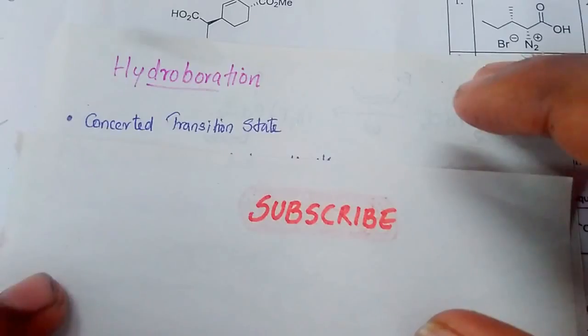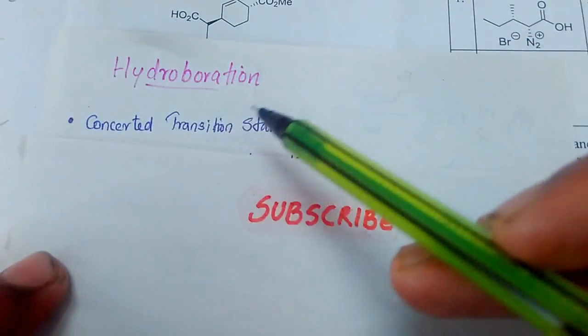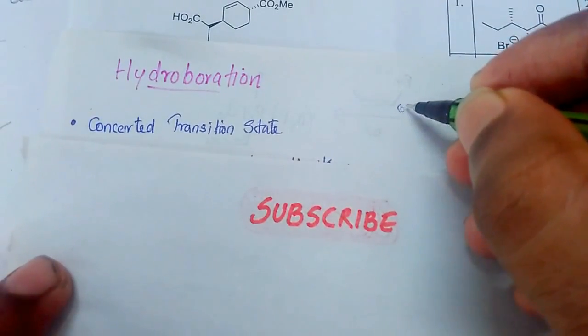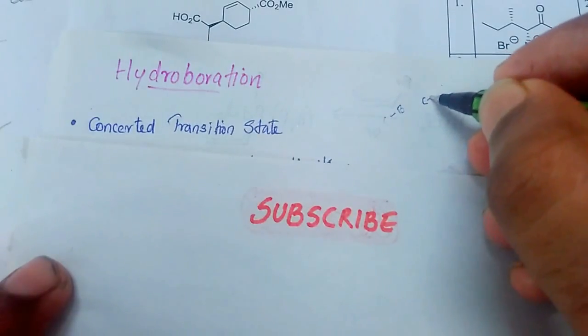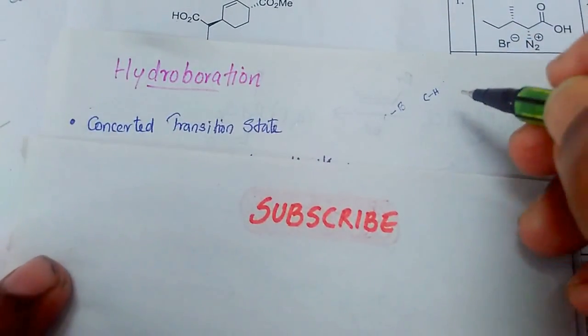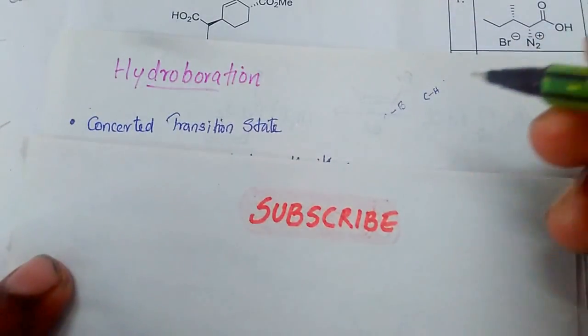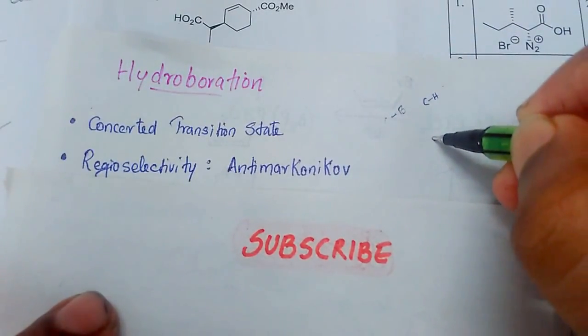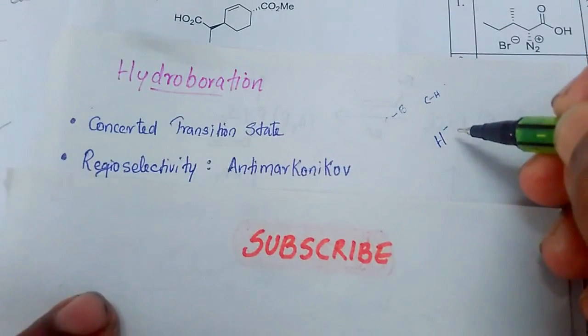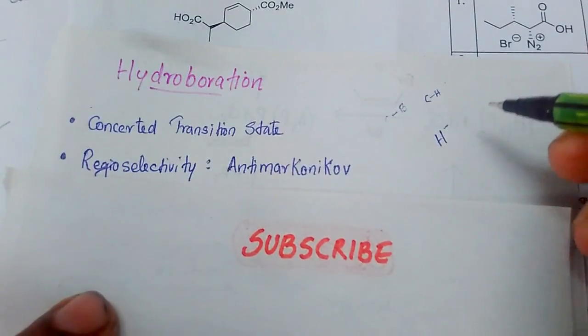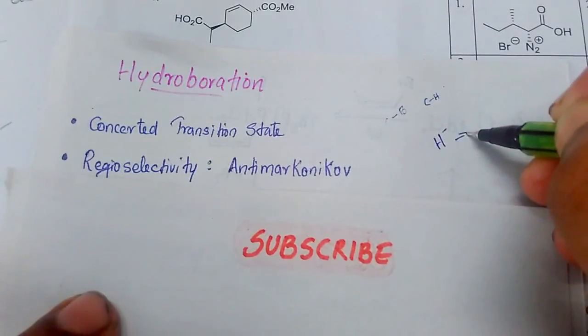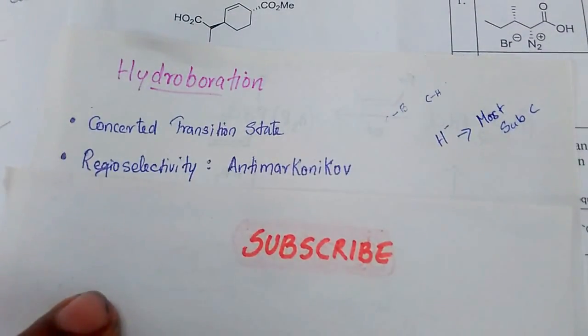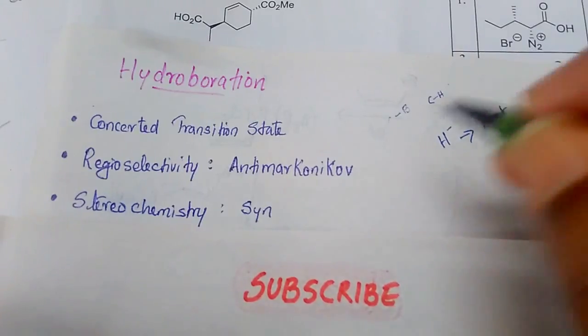Here, the hydroboration is the first step. Hydroboration has a concerted transition state where both the boron-carbon bond and the boron-hydrogen bond are formed at the same time. This regioselectivity is Anti-Markovnikov rule, where the hydrogen is added and the hydrogen is going to the carbon atom having lesser number of hydrogens or the more substituted carbon. It is going to the most substituted carbon and it is having syn stereochemistry.